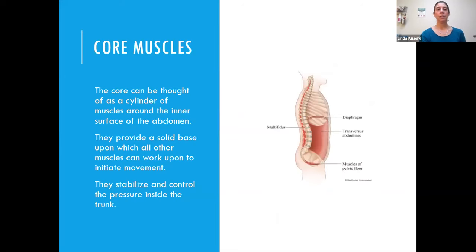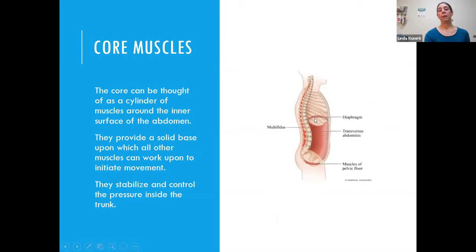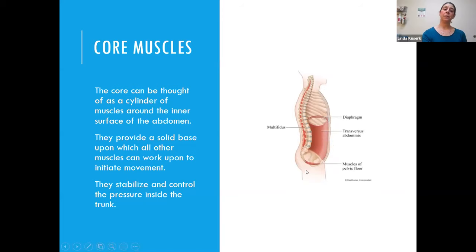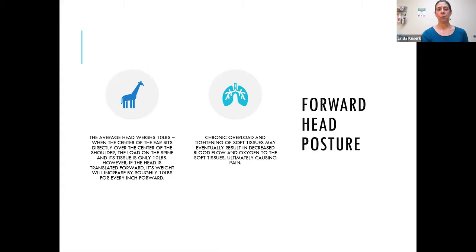In addition to spinal alignment, we consider muscle strength and core muscles. Your core is a cylinder of muscles around your abdomen including the diaphragm at the top — which drops when you breathe in and rises when you exhale — the transversus abdominis (the deepest abdominal layer), the pelvic floor at the bottom, and the multifidus, which are deep back muscles. All these muscles work together to provide a stable base for your arms and legs and stabilize pressure in the trunk.